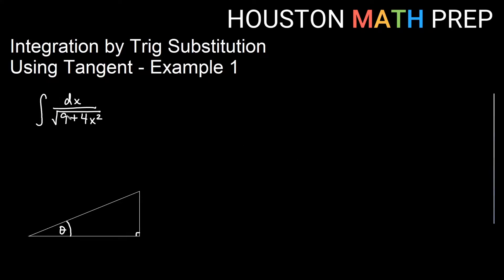Here I have the integral of dx over the square root of 9 plus 4x squared. If you look at this, you'll notice this has a squared plus u squared in it, which tells me I'll be using a tangent substitution.